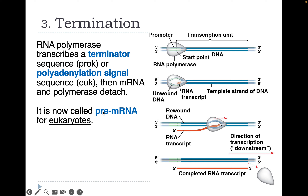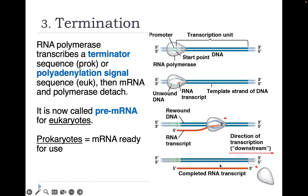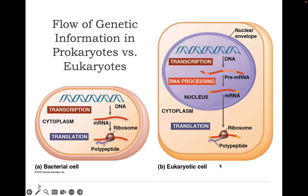The RNA is now called pre-mRNA in eukaryotes. In prokaryotic cells, the mRNA molecule is ready to be used at the ribosome immediately.